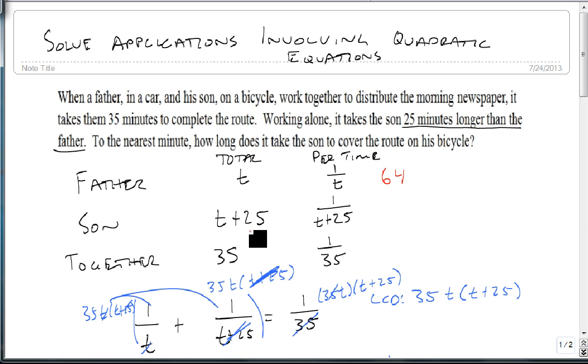And the son does it in 25 more than that, so 64 plus 25, which is 89 minutes. So our answer to the question is it'll take him 89 minutes working by himself to finish the job, rounded to the nearest minute, of course.